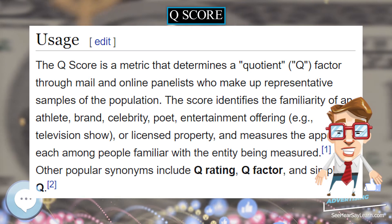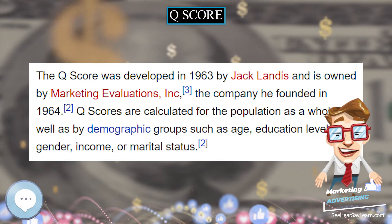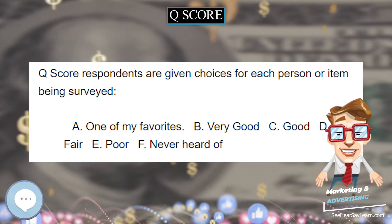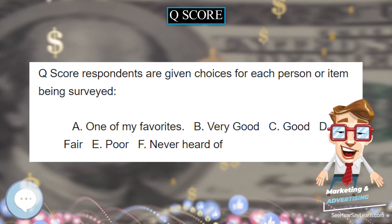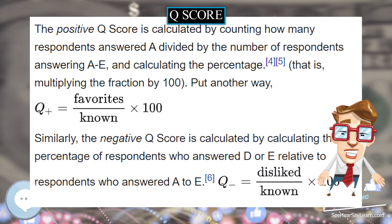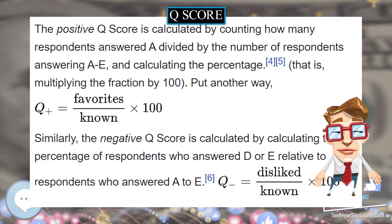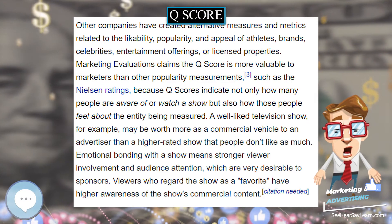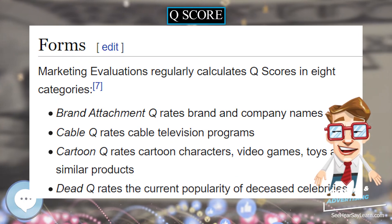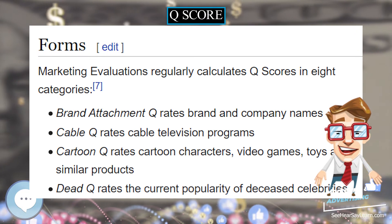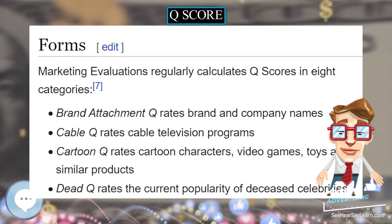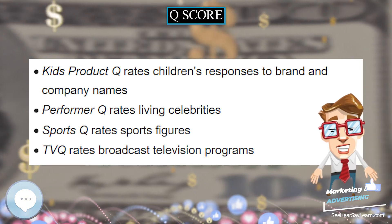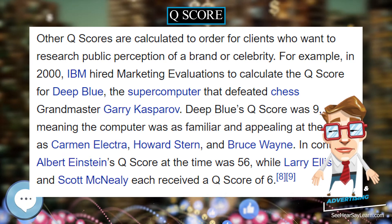Marketing Evaluations claims the Q-score is more valuable to marketers than other popularity measurements such as the Nielsen ratings, because Q-scores indicate not only how many people are aware of or watch a show, but also how those people feel about the entity being measured. A well-liked television show, for example, may be worth more as a commercial vehicle to an advertiser than a higher-rated show that people don't like as much. Emotional bonding with a show means stronger viewer involvement and audience attention, which are very desirable to sponsors.